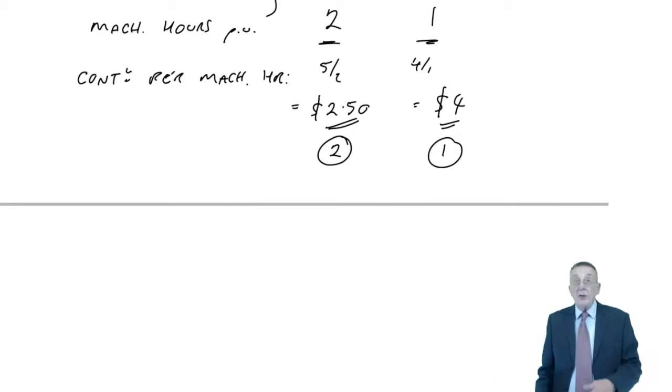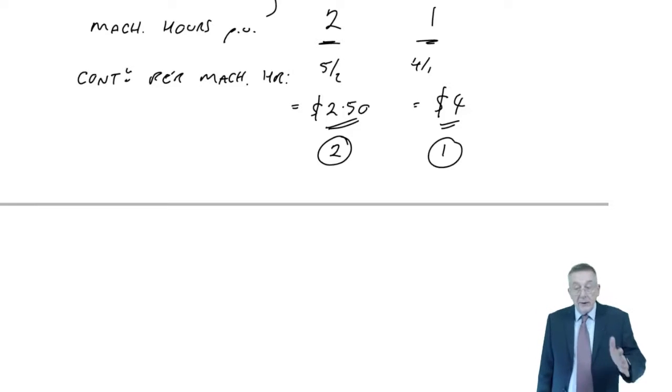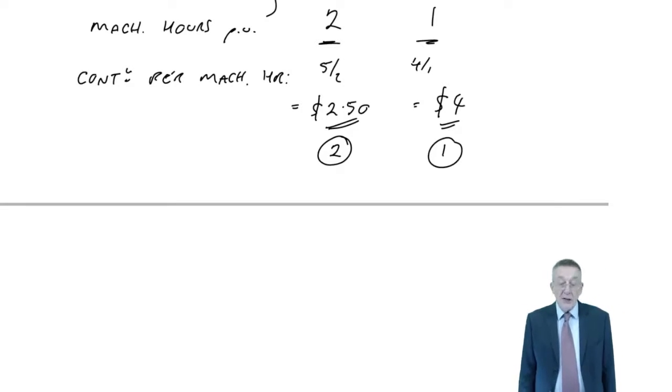So where's the best use of our limited hours? B is best at $4 an hour, A is second best. I've kept this short, but there's no reason why there shouldn't be three, four, five products. You'd rank them in order of the contribution per machine hour.